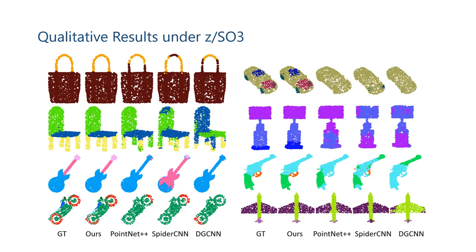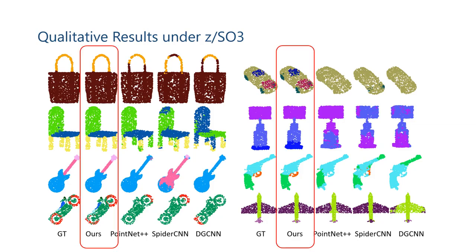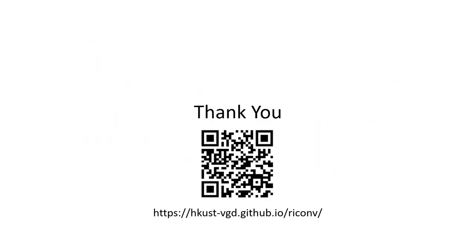We also show qualitative results here. It is shown that our method produces results very similar to the ground truth, while other methods deviate from the ground truth significantly. Thank you very much.